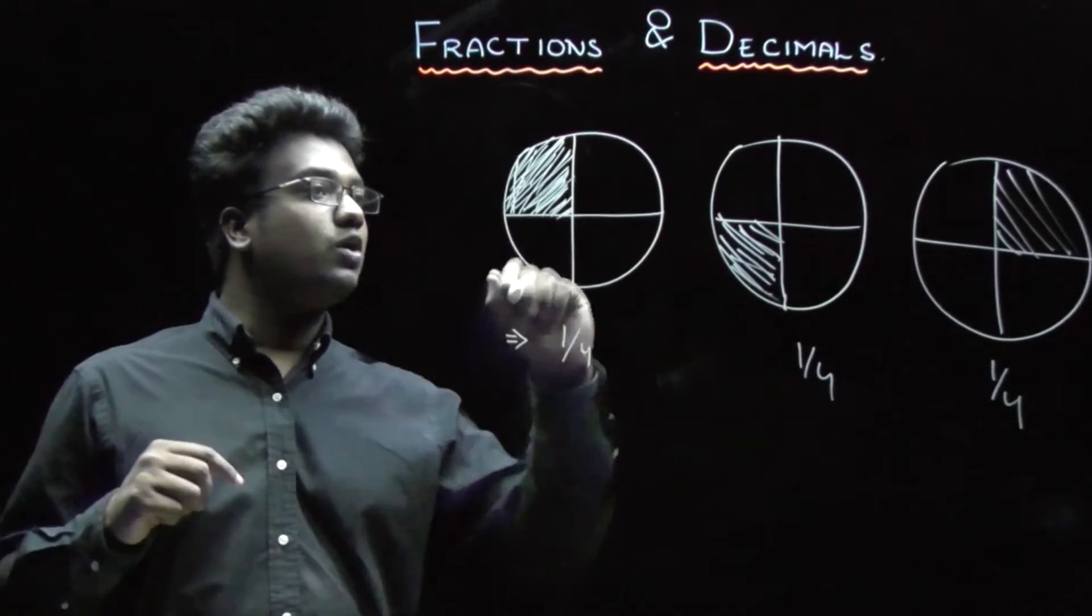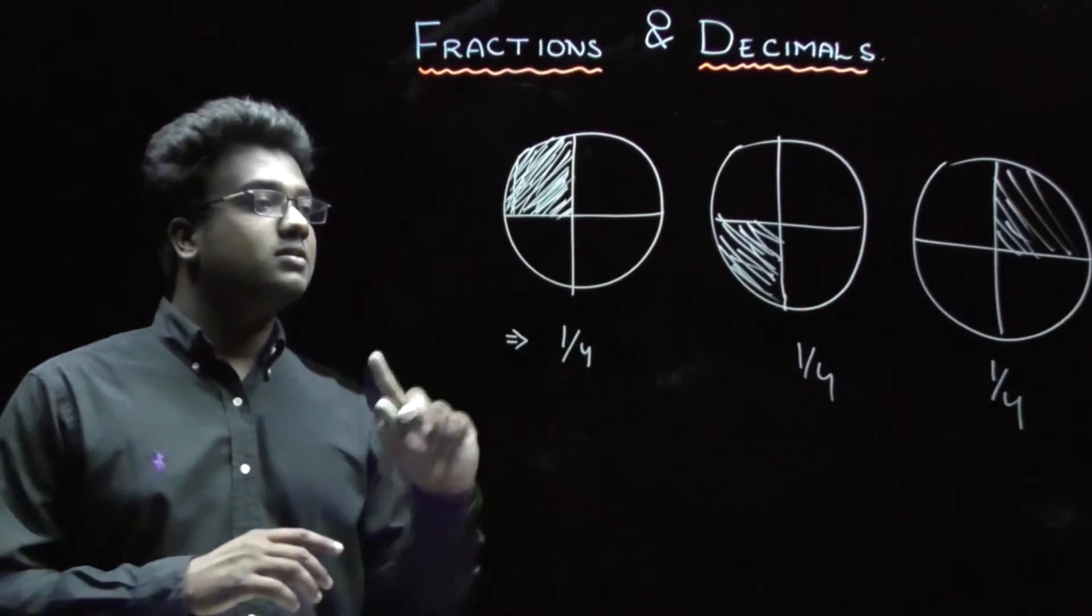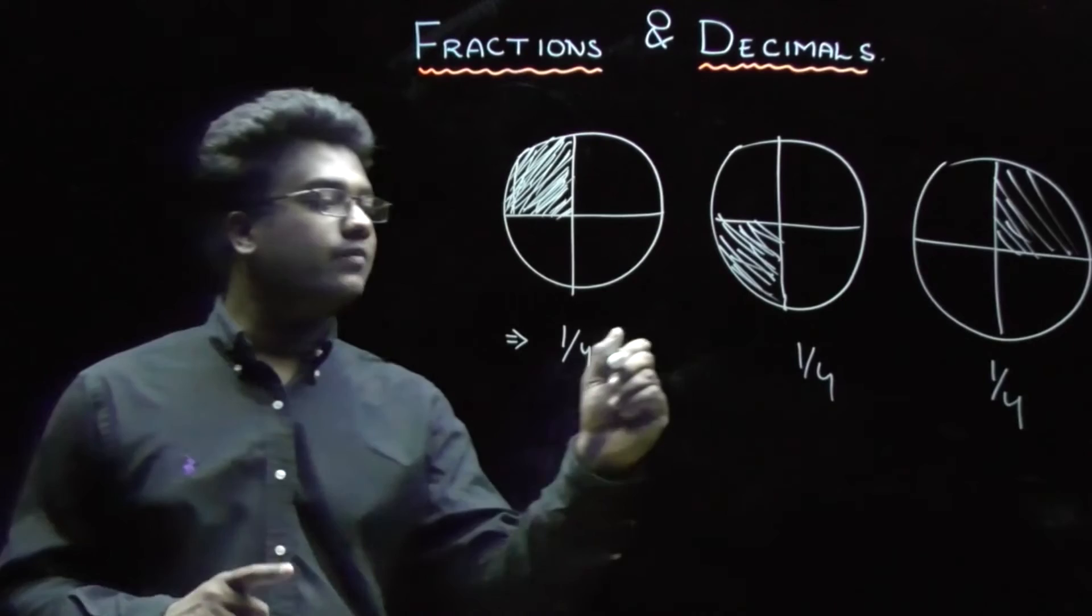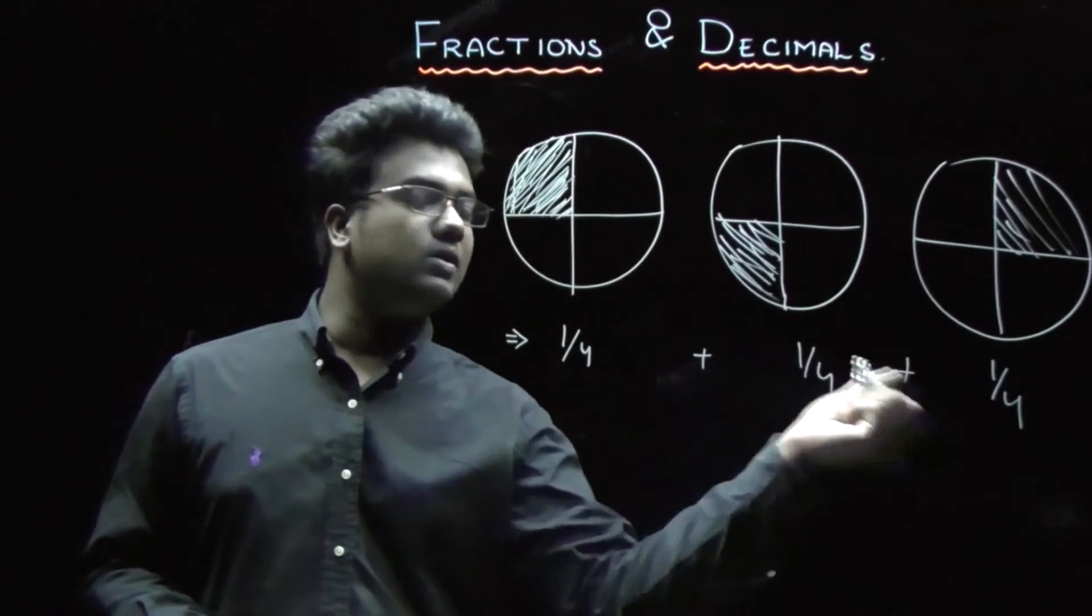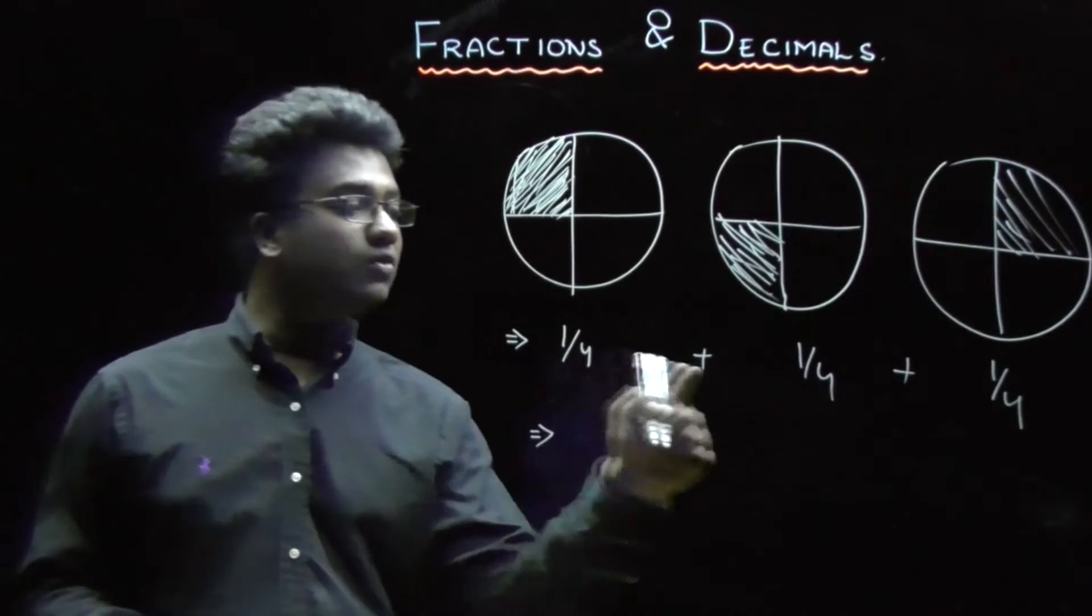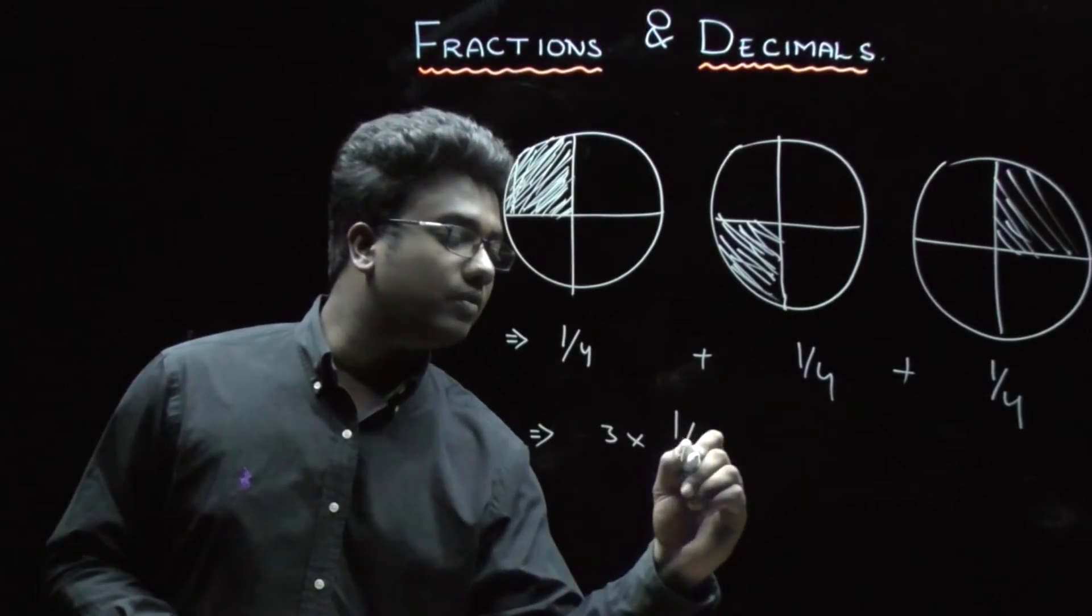Now, what is the fractional value of this whole shaded part of all these three circles? In order to calculate that, we need to just add all these fractions. Now, this 1 by 4 has been added thrice, right? So, it is three times of 1 by 4.